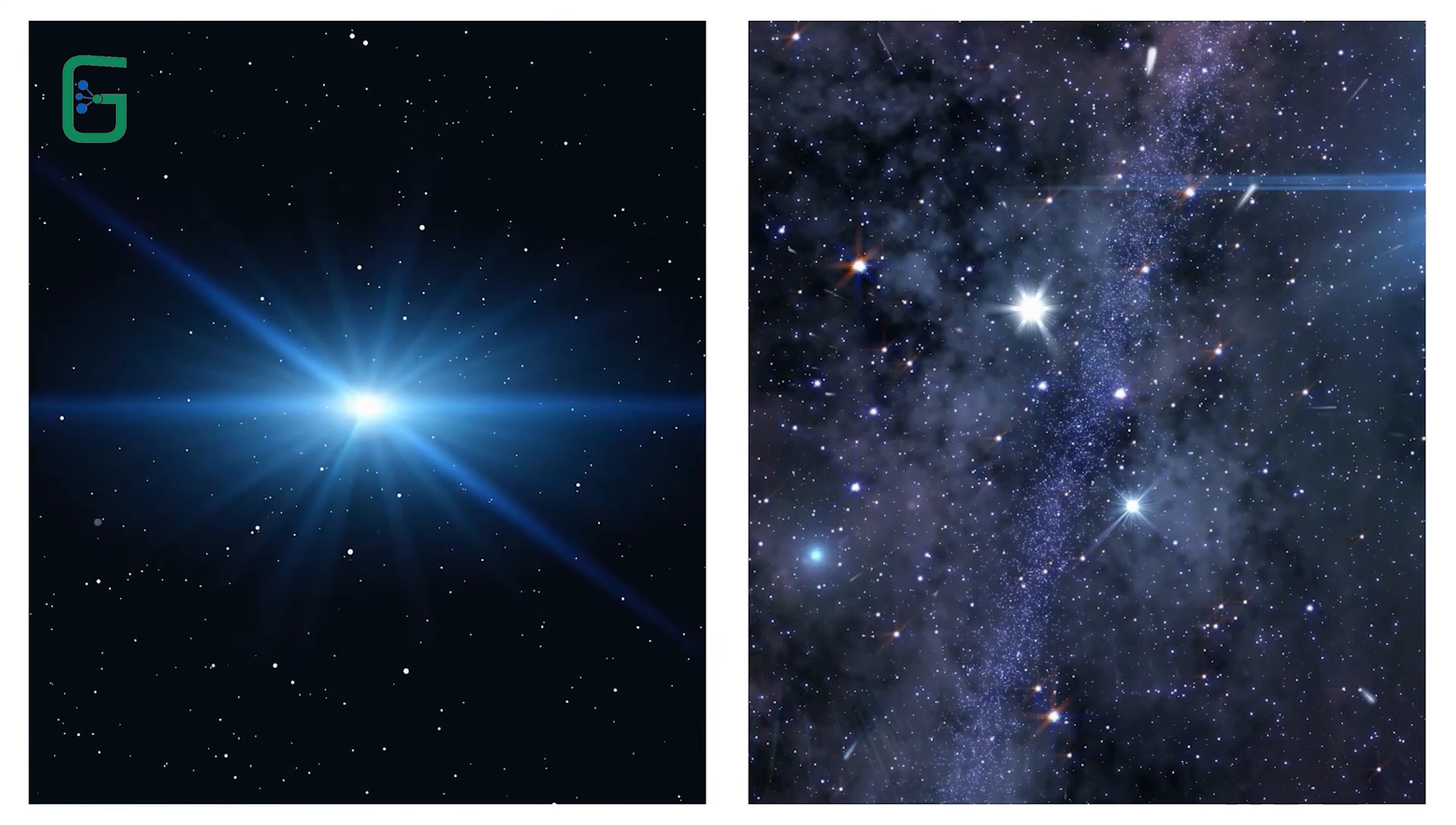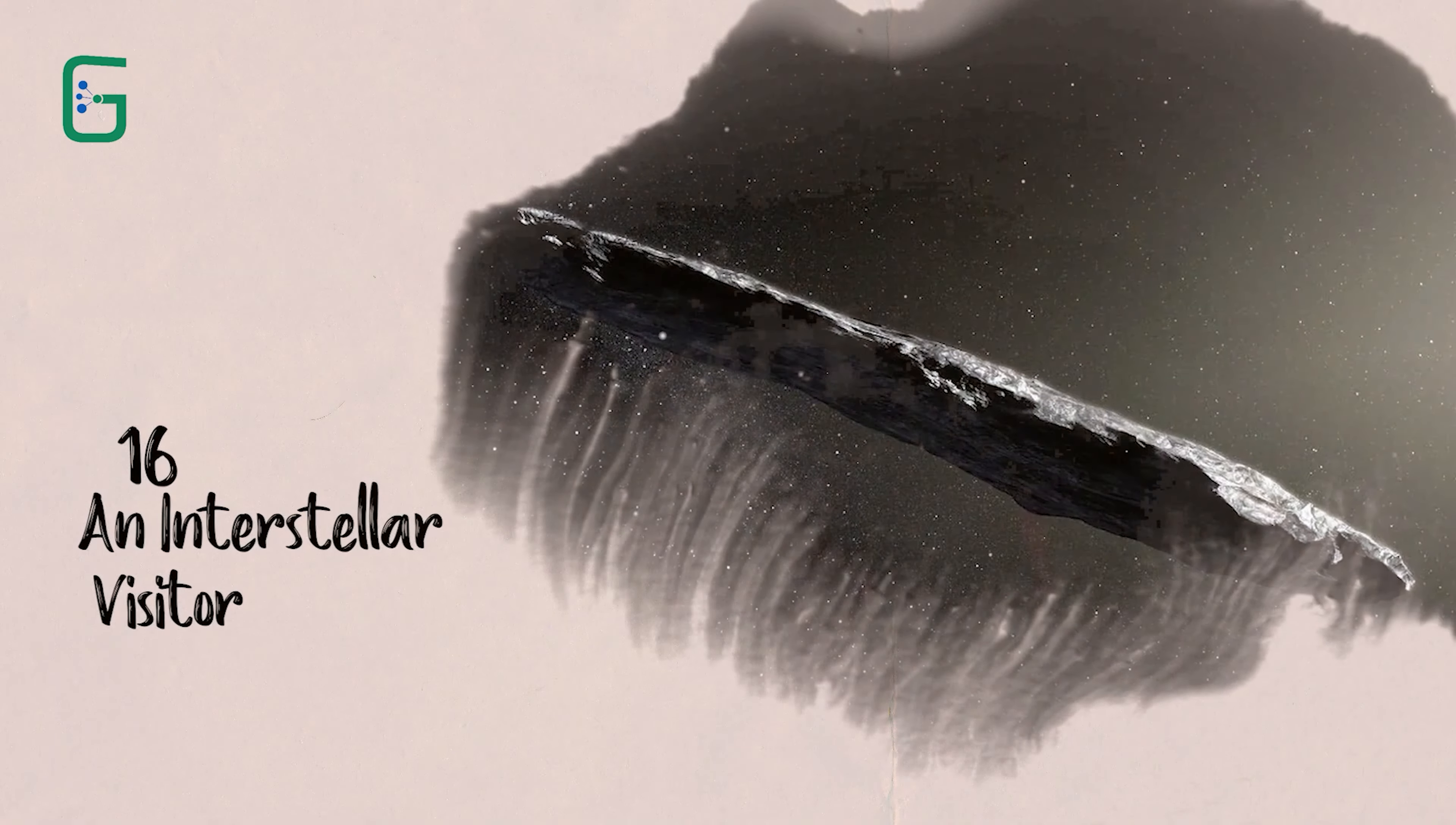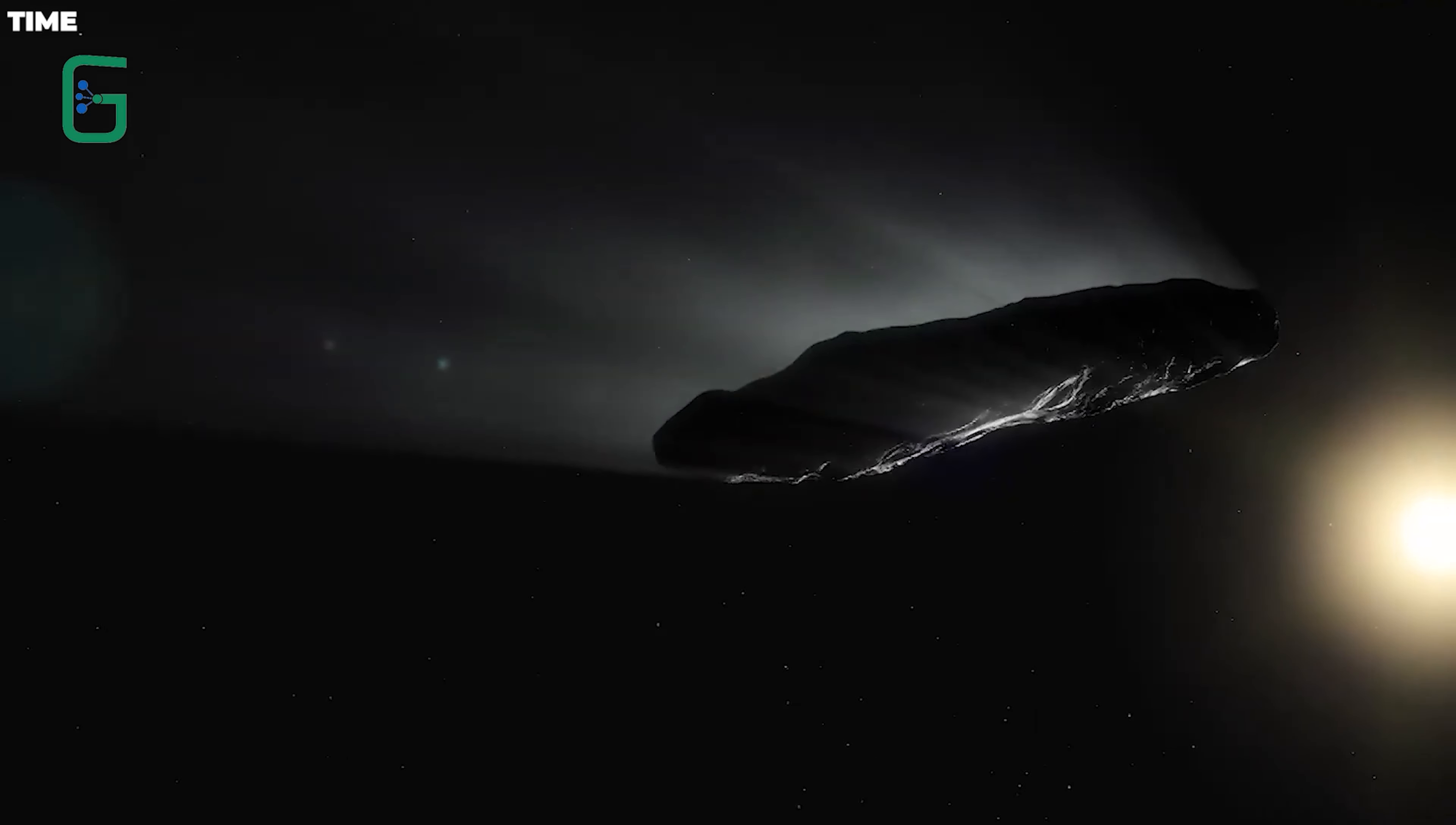Number 18, Terrifying Exoplanet. The James Webb Telescope made a chilling discovery in 2013 when it captured an image of a planet known as VHS-1256b.